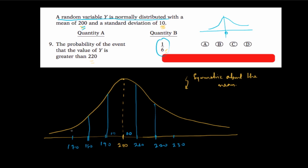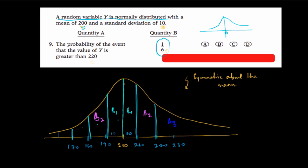I divided this curve into 6 regions. Note the areas here are equal to each other on opposite sides. If this is A1, the area of A1 is the same as the area of B1, because the curve is symmetric about the mean. Similarly, area A2 corresponds to area B2, and area A3 corresponds to area B3. Our aim now is to find the probability that Y is greater than 220, which corresponds to the area of the rightmost region.